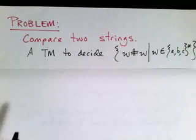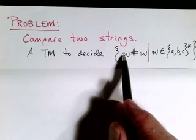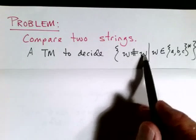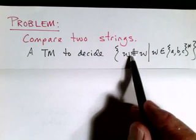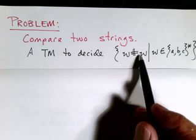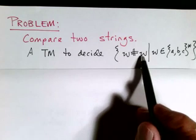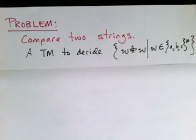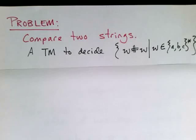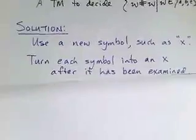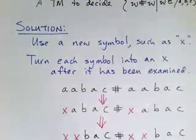Our next task is to recognize this language. W, which is a string of A's, B's and C's, followed by a pound sign, followed by that same string again. So the first half has to be equal to the second half. So we essentially have to compare an arbitrarily long string to a second arbitrarily long string to make sure they're equal. This is a very useful subroutine to have in Turing machines because we oftentimes need to ask whether one thing is equal to another thing, or more precisely, whether its representation is equal to the representation of a second thing.